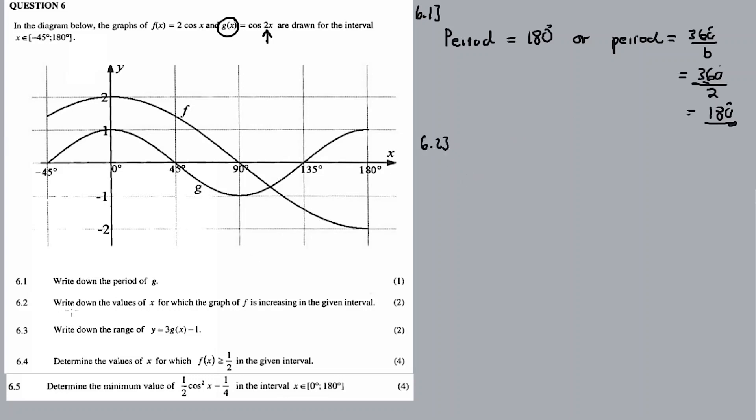6.2: Write down the values of x for which the graph of f is increasing in the given interval. All right, we want to join with the graph here increase. If the graph here is steep like this, the graph here increase. If the graph here is flat, it's no longer increasing, meaning the gradient is zero. If the graph here is sloping down, the graph here is decrease.